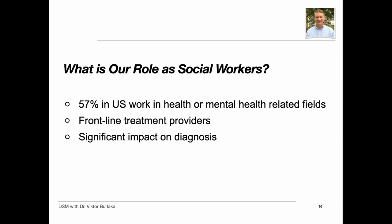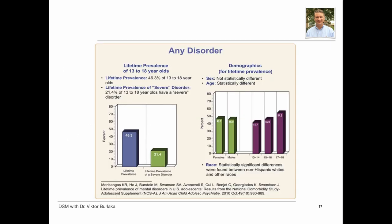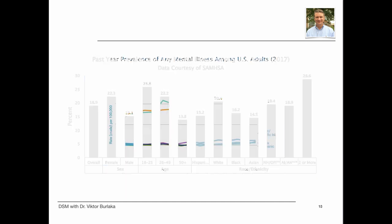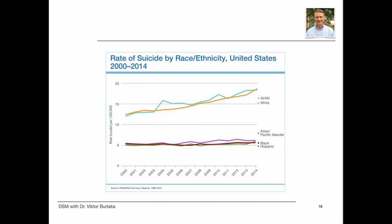Most of us social workers are employed in mental health-related fields. In most cases social workers are the frontline treatment providers. As such, we have a significant impact on the diagnosis. Mental disorders are highly prevalent among U.S. adolescents and adults. Suicide rates are growing. Suicide is the 10th leading cause of death overall in the U.S. White, American Indian, and Alaska Native people are at highest risk of ending their lives. Why is this?